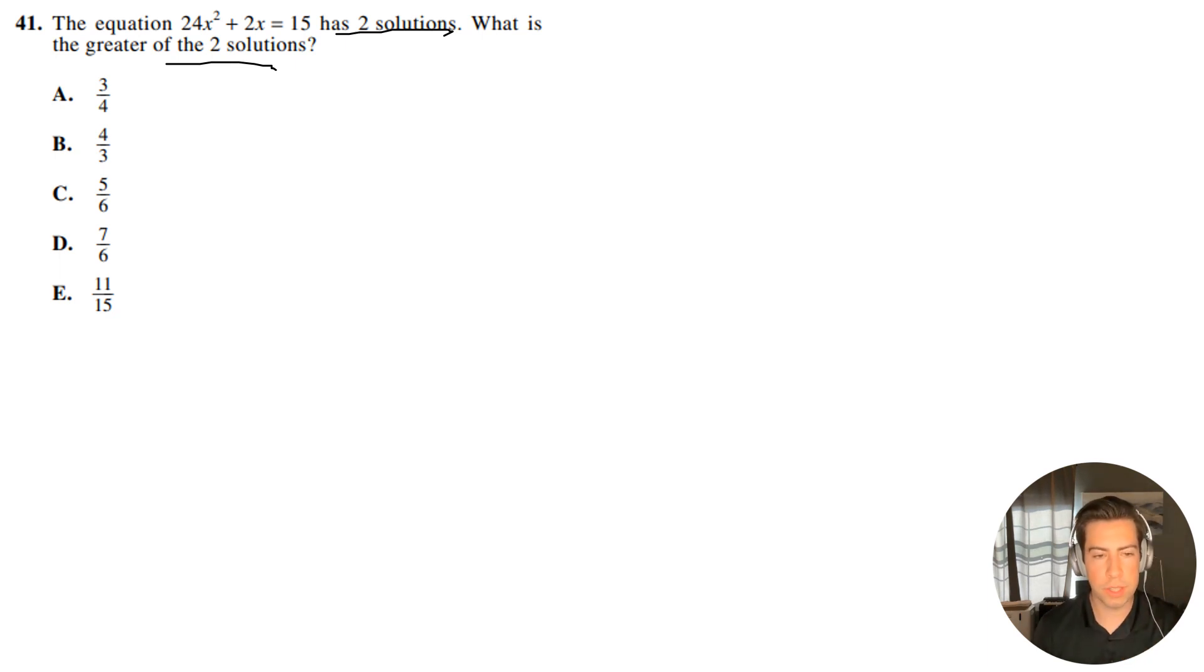So basically what I want to do here is get this in a format where we can use the quadratic formula, because this is going to get kind of nasty. So it's 24x² + 2x, and I'm going to subtract 15 from both sides, so -15 = 0.